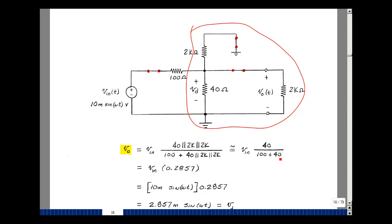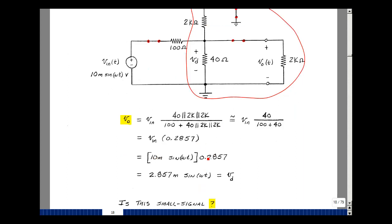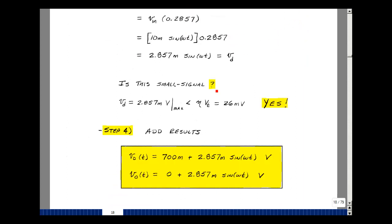If you want to be more precise, you can calculate it exactly. That's going to give me a value of 0.2857 times V_in. What's V_in? It's 10 times the sine of omega t. Multiplying 10 milli times this, we get 2.857 milli times the sine of omega t. V_out and v_d are the same for AC.